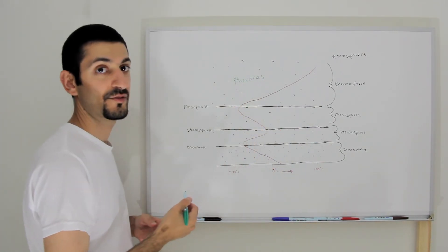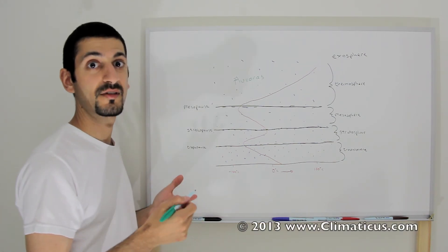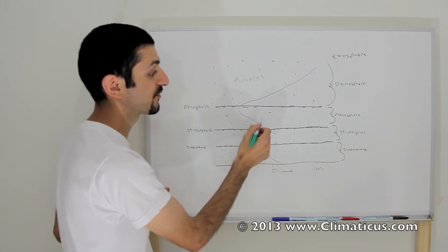With the mesosphere, the atmosphere, although really, really thin, is still thick enough that that is where you see a lot of meteors.